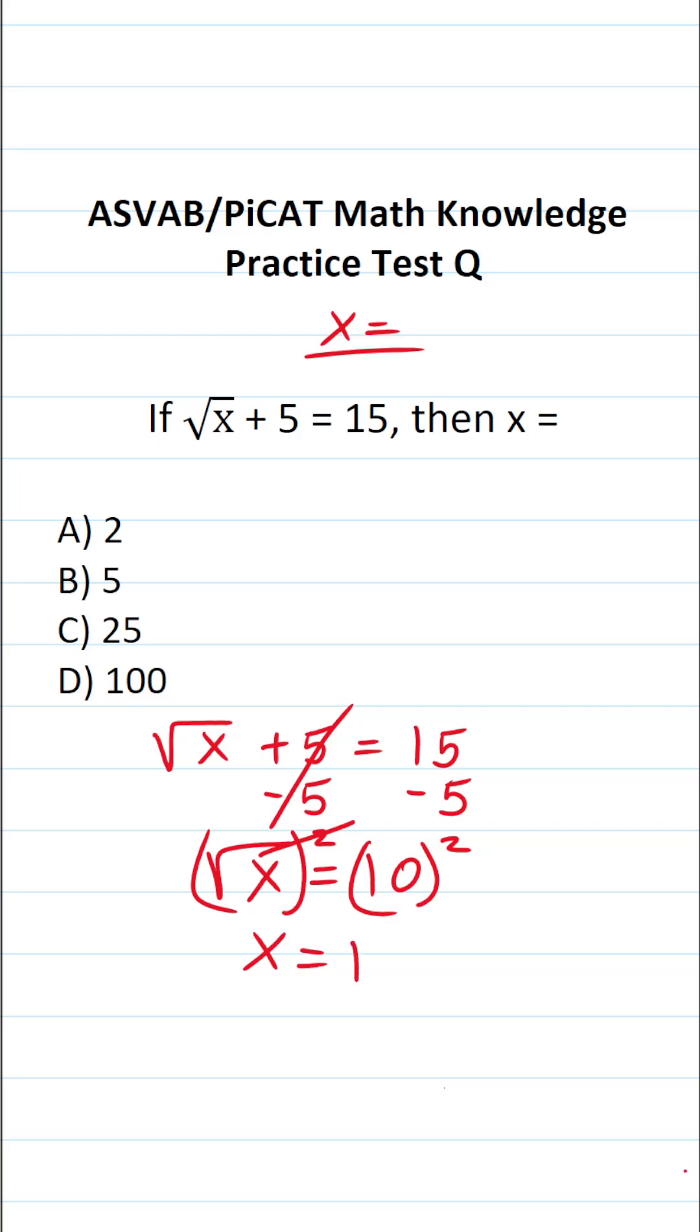10 squared is the same thing as 10 times 10. And you should know that 10 times 10 is 100. So x in this case is going to be D, 100.